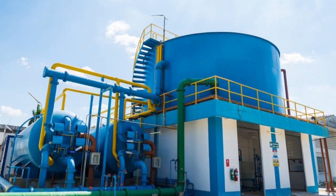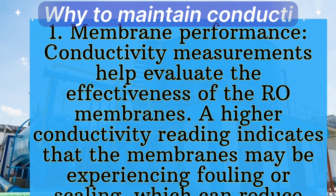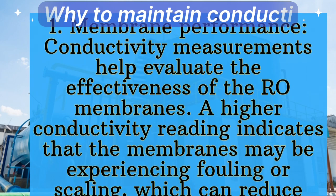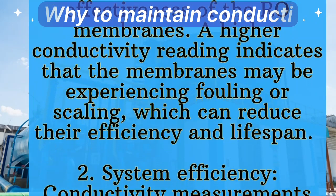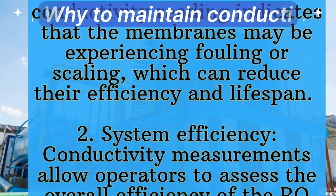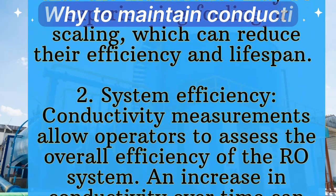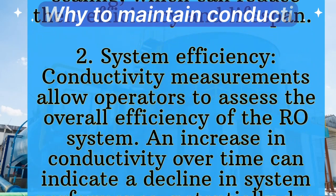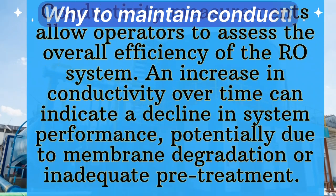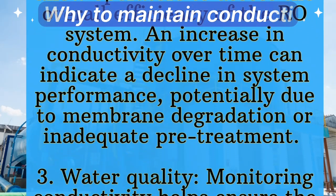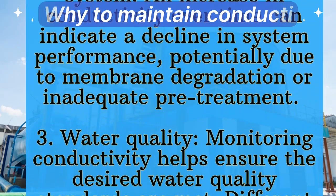In RO plant monitoring, water conductivity is important for several reasons. First, membrane performance: conductivity measurements help evaluate the effectiveness of the RO membrane. A higher conductivity reading indicates that the membranes may be experiencing fouling or scaling, which can reduce their efficiency and lifespan. Second, system efficiency: conductivity measurements allow operators to assess the overall efficiency of the RO system. An increase in conductivity over time can indicate a decline in system performance, potentially due to membrane degradation or inadequate pretreatment.